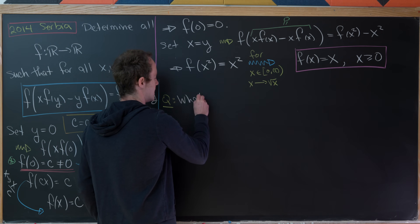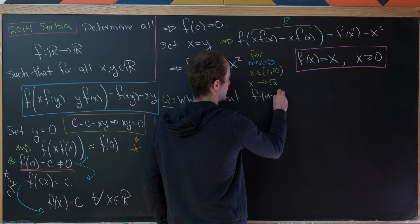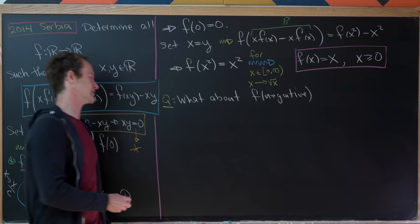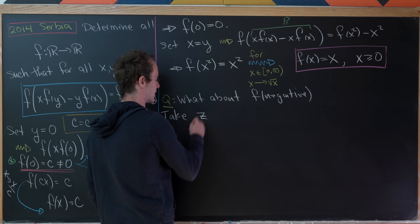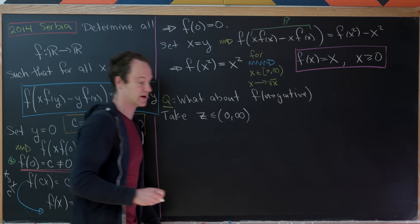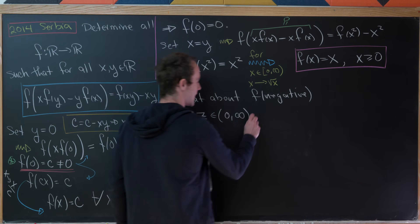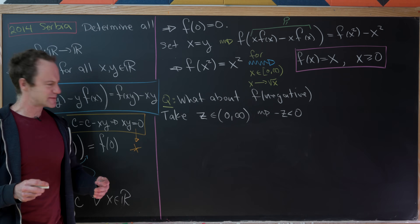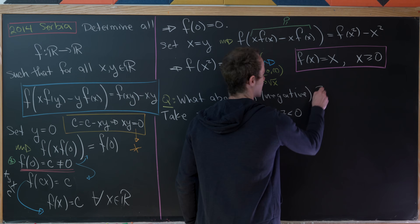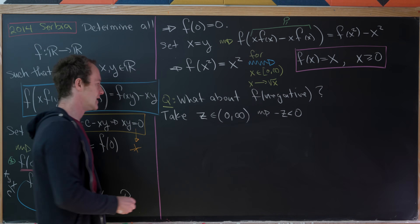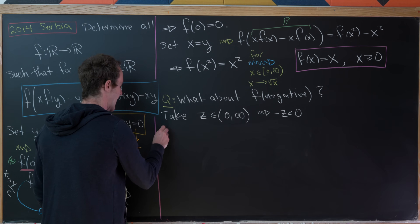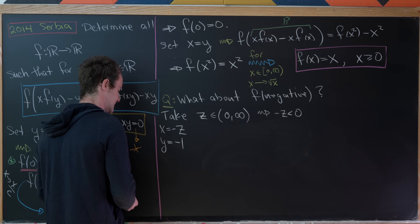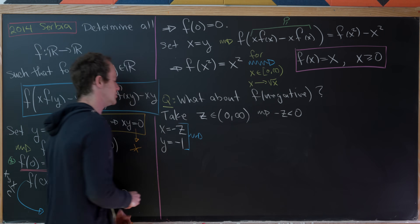Here's where it gets a bit tricky. Let's take an arbitrary positive number z, so z ∈ (0, ∞), meaning −z is negative. We'll work with this to understand f on negative inputs. We'll take our original equation and set x = −z and y = −1.